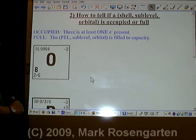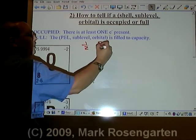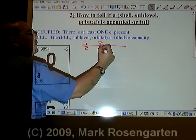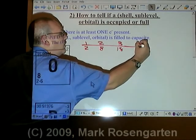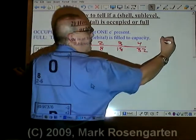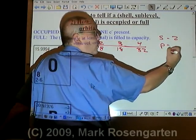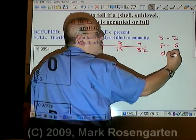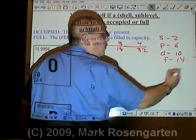For this oxygen, remember the first energy level can hold up to two electrons. The second energy level can hold up to eight. The third energy level can hold up to 18. The fourth energy level can hold up to 32. The S sublevel can hold up to two electrons. The P sublevel can hold up to six electrons. The D sublevel can hold up to ten electrons, and the F sublevel can hold up to 14 electrons.